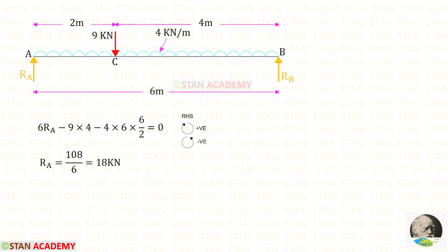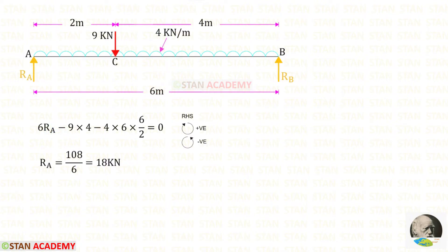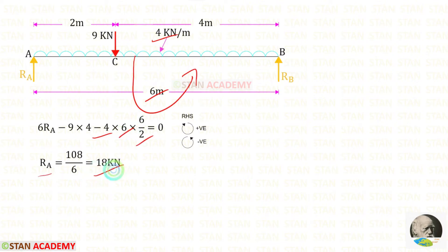First let us find the reaction RA. For that I am going to take moment about B, moving towards the right hand side — clockwise will be positive and anti-clockwise will be negative. RA is acting clockwise, so positive, with distance 6: giving 6RA. The 9 kN load is anti-clockwise, negative, at distance 4. The UDL 4 kN/m is also anti-clockwise, negative; for the UDL we multiply with the distance and distance over 2. Finally, for RA we get 18 kilonewton.